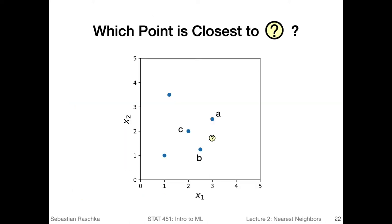To test your understanding, here's a simple question: given our dataset with five dots, which point is closest to the question mark point? Pause the video and think about this. One missing component you may have realized is that in order to answer which point is closest — A, B, C, D, or E — you need to know how the distance measure is defined.